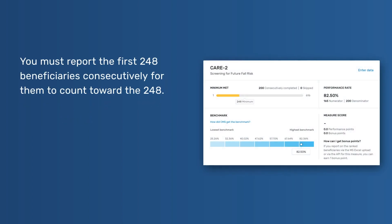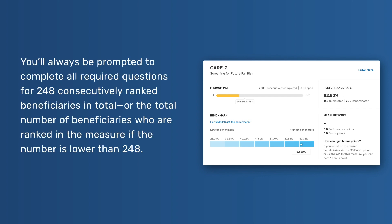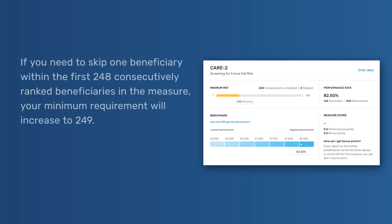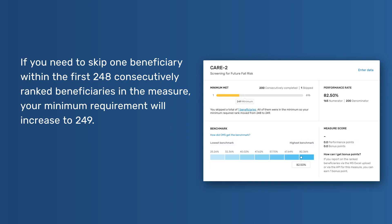Successful Reporting: You must report the first 248 beneficiaries consecutively for them to count toward the 248. You'll always be prompted to complete all required questions for 248 consecutively ranked beneficiaries in total, or the total number of beneficiaries who are ranked in the measure if the number is lower than 248. If you need to skip one beneficiary within the first 248 consecutively ranked beneficiaries in the measure, your minimum requirement will increase to 249.